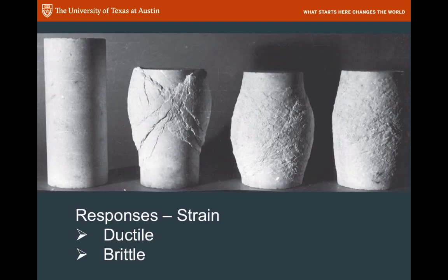Strain is the response to stress — it's what happens to the rock when you put it under stress. This is a sequence of four experiments from the rock deformation lab at Oklahoma University. You can see in the first cylinder on the left, that's the undeformed cylinder. Then we have one that broke by cracking — that's brittle behavior, it's breaking. In the middle, we have maybe a little bit of cracking but more flowing, more ductile behavior. And on the right, a fully ductile deformation of that rock.